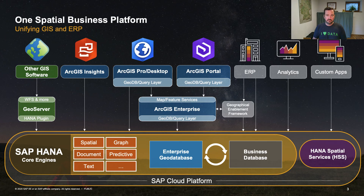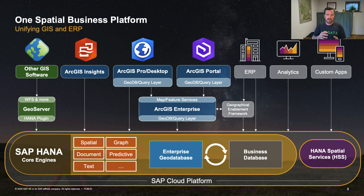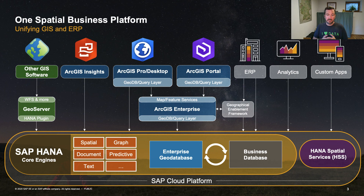Let's look at it from the perspective of spatial data in the SAP ecosystem. Our foundation is SAP HANA with its core engines: the spatial engine, the document engine, the graph engine, and the predictive libraries — all part of the multi-model data concept. On a database level you might have your business database from an ERP system and your enterprise geo database where your GIS department works. Your data can be augmented by third-party spatial data like weather data using HANA Spatial Services. You can also connect your classical ERP software, analytics software, custom applications, as well as GIS software like ArcGIS to that platform.